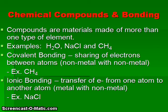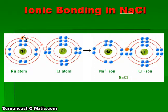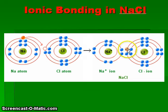Ionic bonding involves the transfer of electrons from one atom to another — a metallic element bonding with a non-metallic element. Sodium chloride is an example, with sodium being metallic and chlorine being non-metallic. When sodium chloride forms, the sodium atom has one electron in its third energy level that is transferred to the chlorine atom. Sodium loses one electron, giving it a positive one charge, while chlorine gains one electron, filling its outer energy level and forming the chloride ion with a negative one charge. The sodium ion and chloride ion stick together because opposites attract.